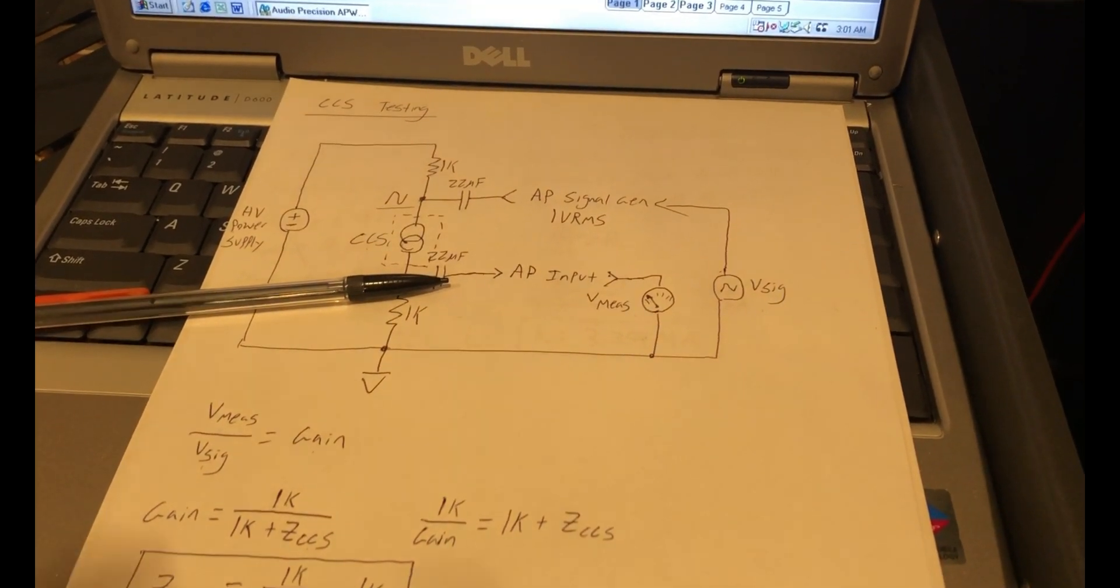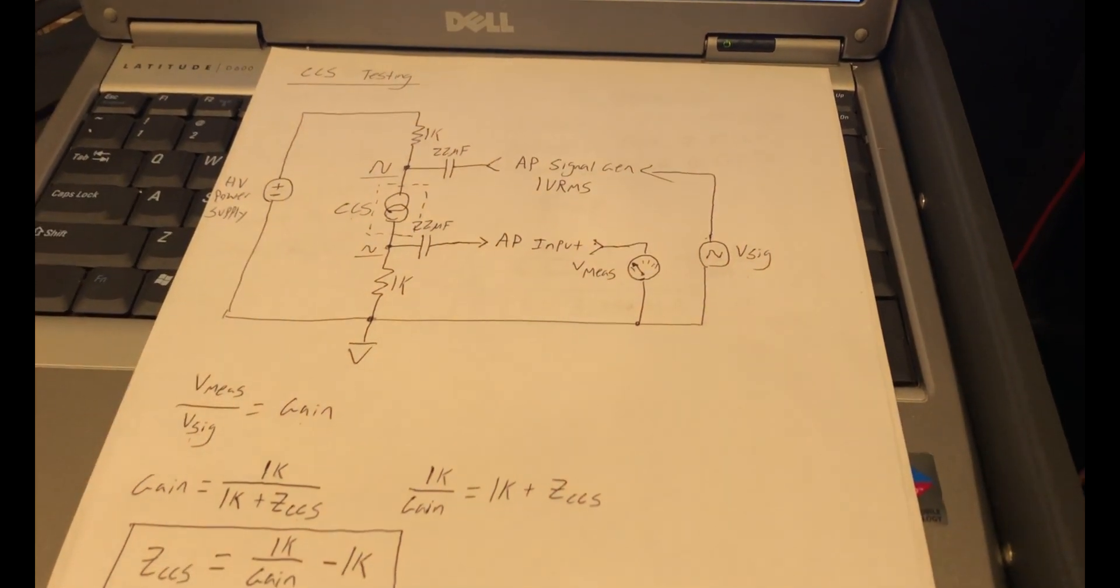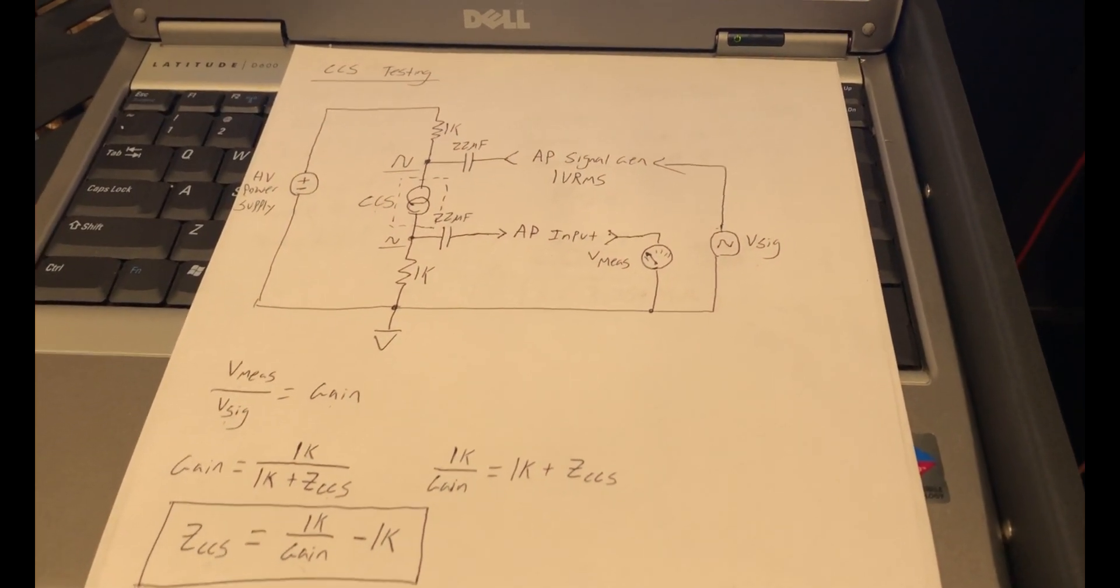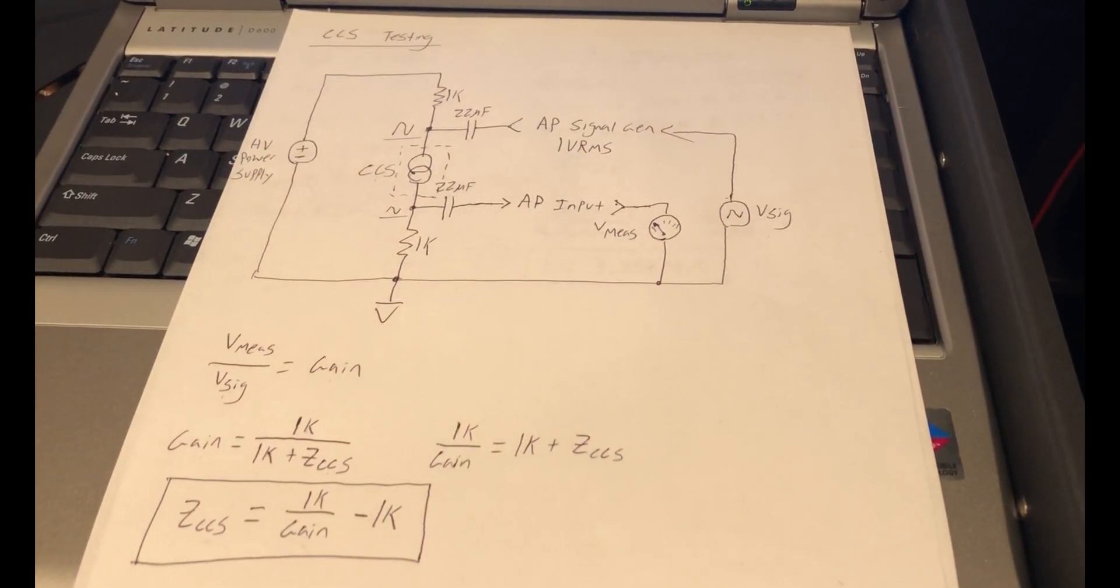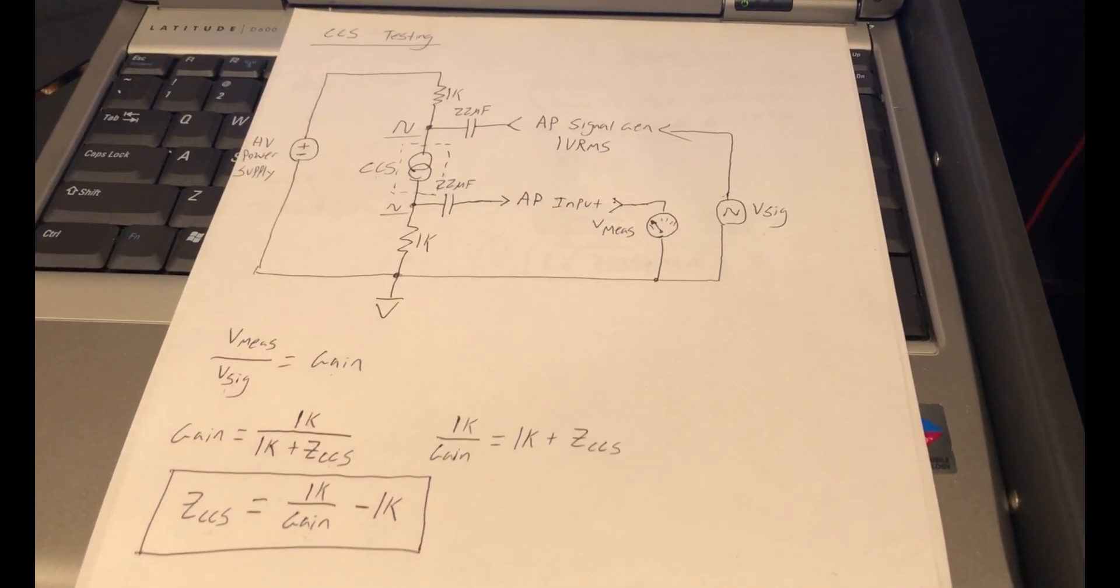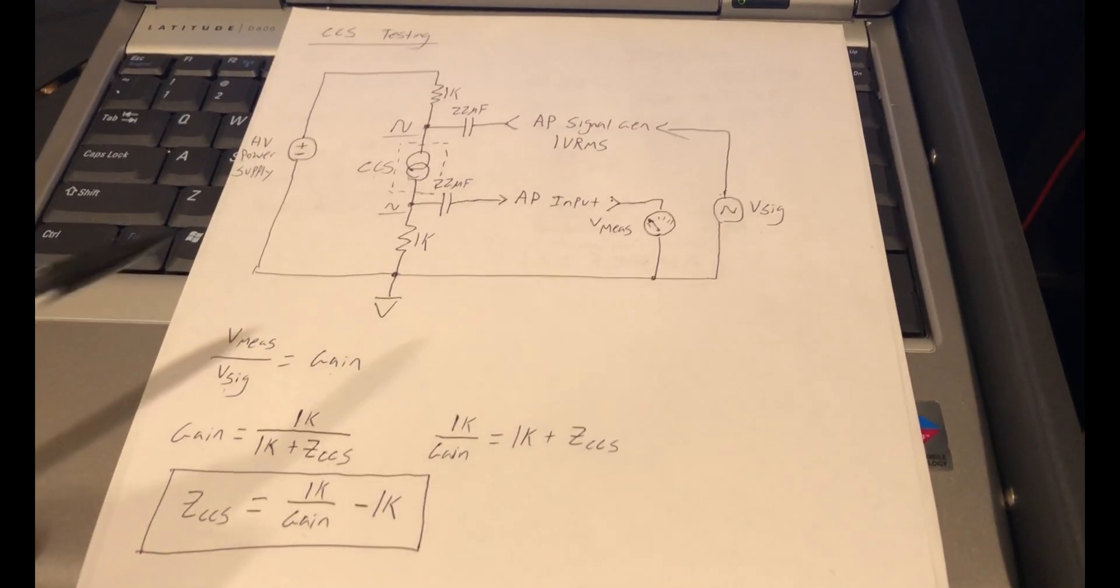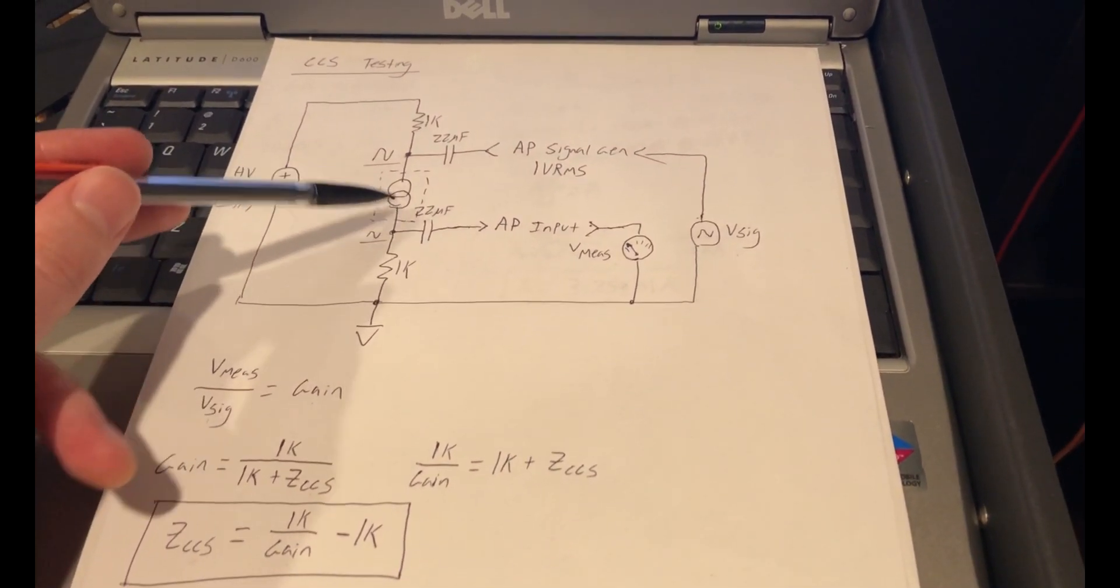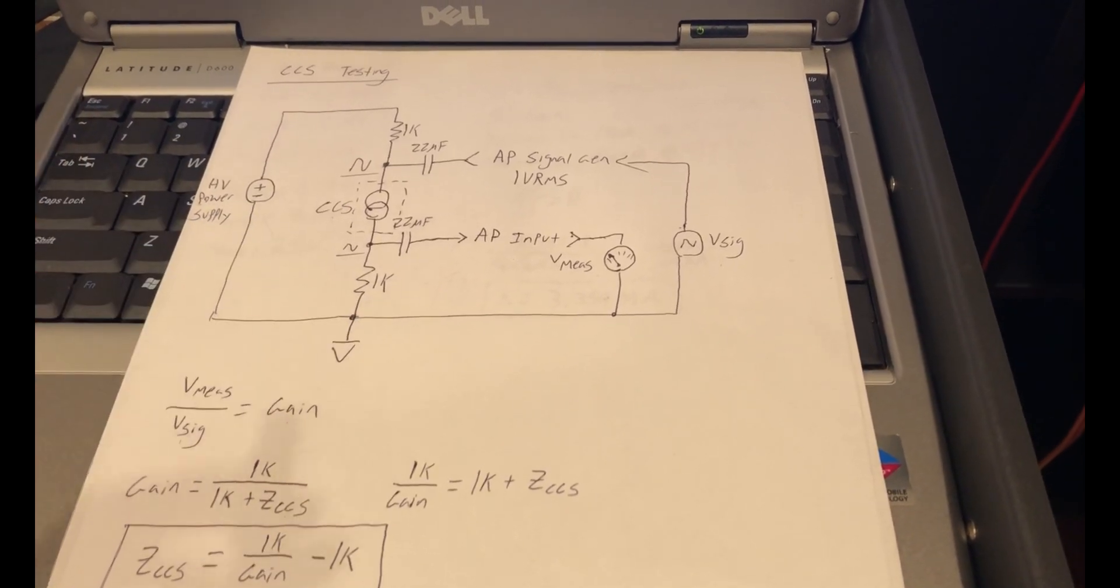Hi everyone, welcome back to project 2845. Since we have our 6AH4 gain stage working well with its constant current source, I wanted to take some time and run some measurements to figure out what the AC impedance is of that constant current source, as well as its actual voltage headroom requirement in order to regulate our desired current target.